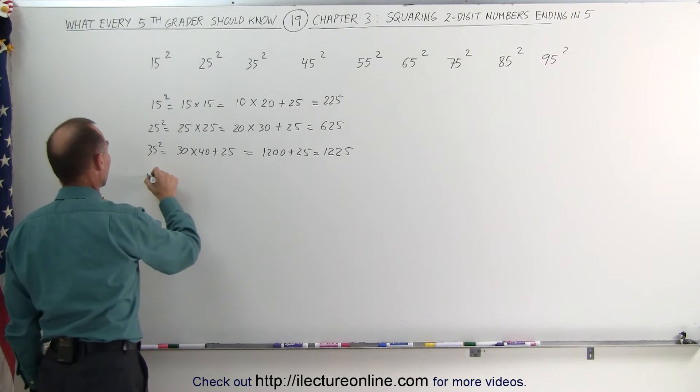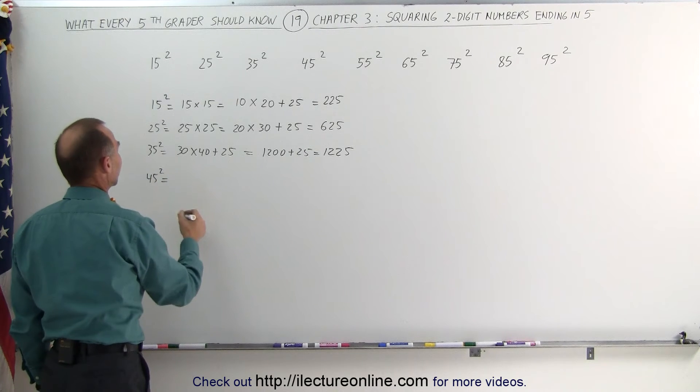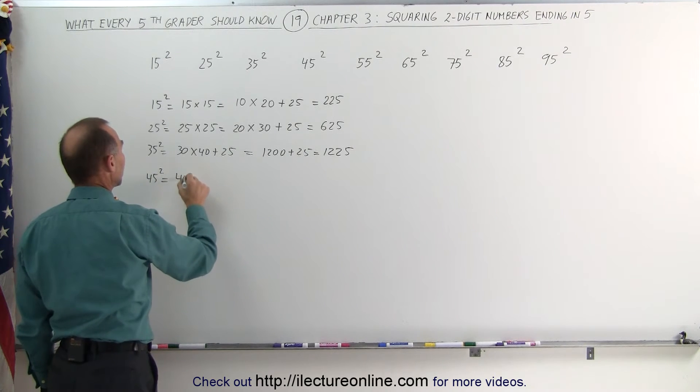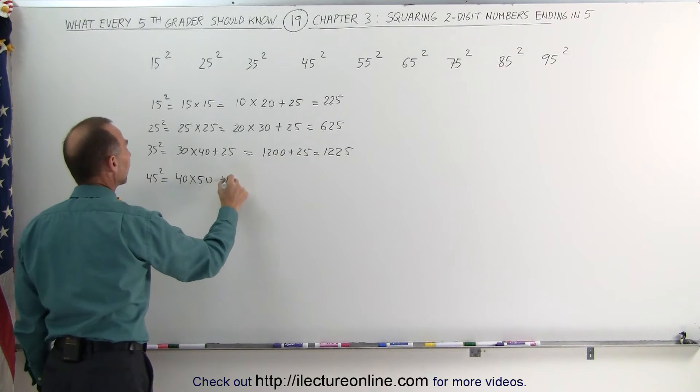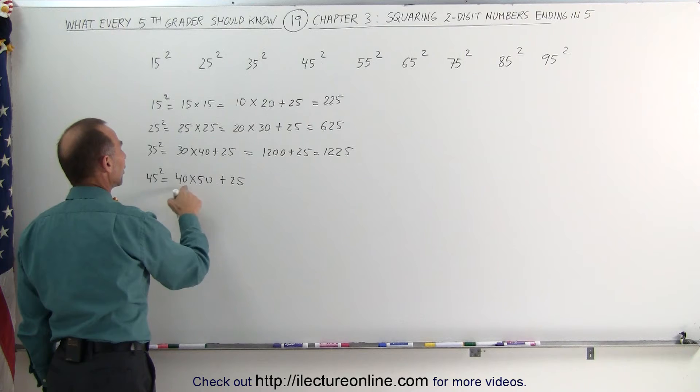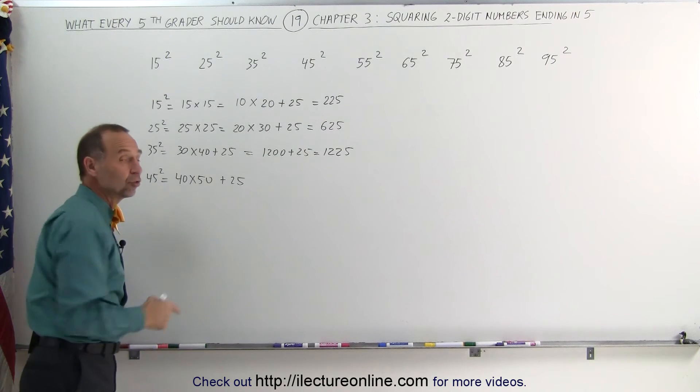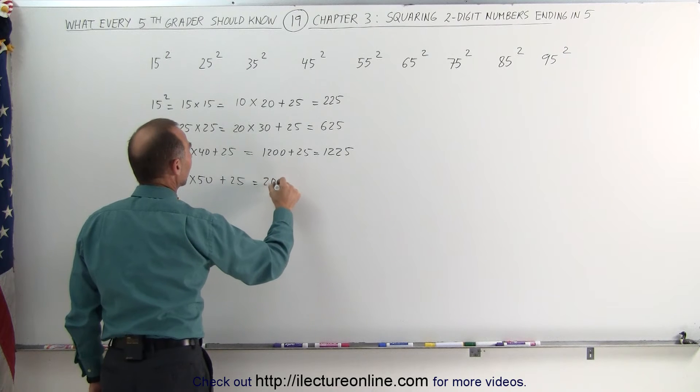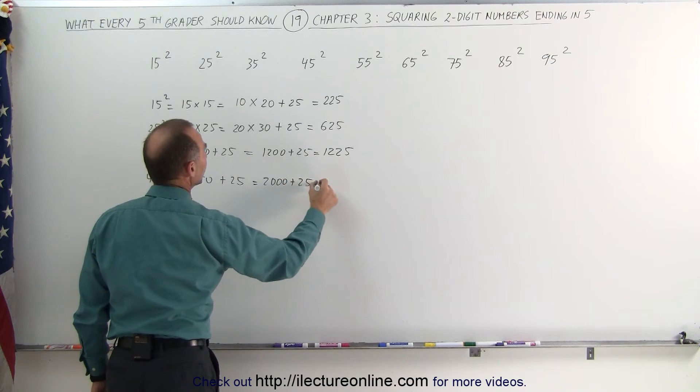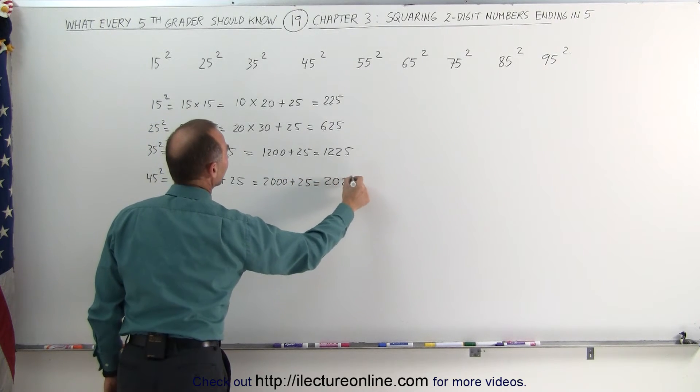Let's try 45 squared. 45 squared, which is 45 times 45, or 40 times 50. Again, subtract 5, add 5, and add 25 to that. Well, 40 times 50 is 4 times 5, which is 20, add 2 zeros, which is 2000, and add 25 to that, which gives you 2025.